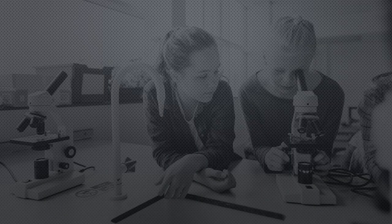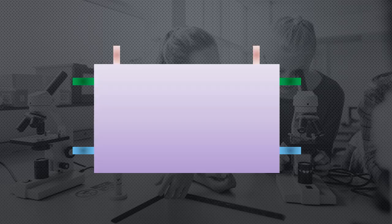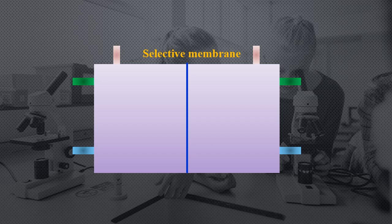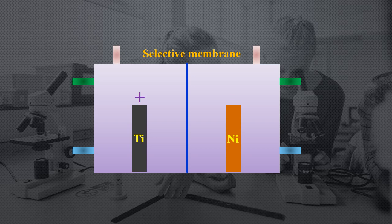The membrane cell consists of an anode chamber and a cathode chamber. These two chambers are separated by a selective membrane, which only allows sodium plus cations to pass between the two chambers. The anode chamber consists of a titanium anode — the positive terminal — and the cathode chamber consists of a nickel cathode — the negative terminal.